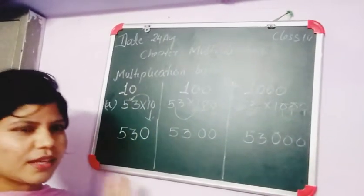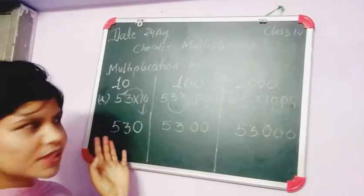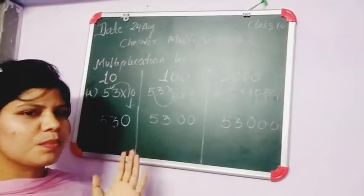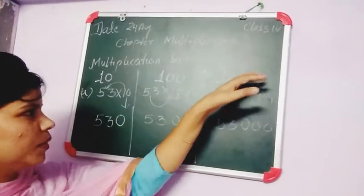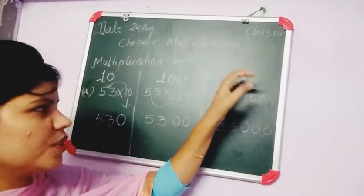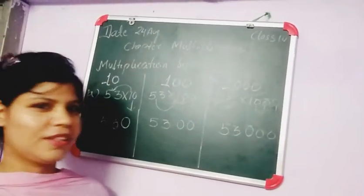Understand, dear students. In exercise 3.1, it is based on this concept. When a number is multiplied by 10, 100, and 1000, you just simply multiply that number by 1 and write that number of zeros which is in this number. Thank you, dear students.